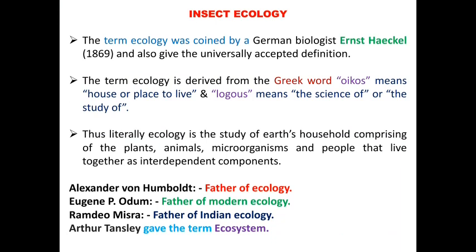These are some of the scientists related to insect ecology. The first is A.V. Humblevolt, referred to as the father of ecology. Then E.P. Odom, father of modern ecology. Ramdev Mishra is an Indian scientist, referred to as the father of Indian ecology. And Arthur Tansley gave the term ecosystem for the first time, which is one of the major concepts in ecology.